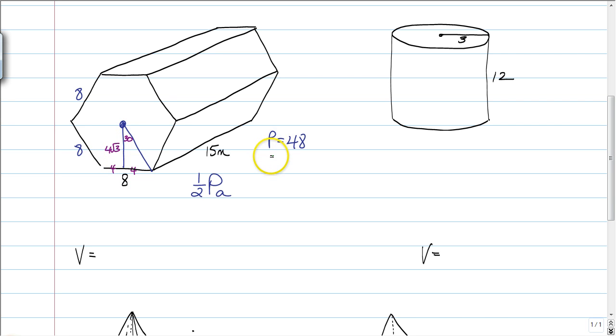So we have our perimeter, our apothem is four root three. So our area of the base is one-half perimeter times apothem. One-half of 48 times an apothem of four root three is going to give us a base area of 96 root three. Now, to find the volume, all you have to do is multiply it by the height of the prism. So we just have to multiply that by 15, and you get a grand total of 1,440 root three meters cubed. And that's it. You're done.